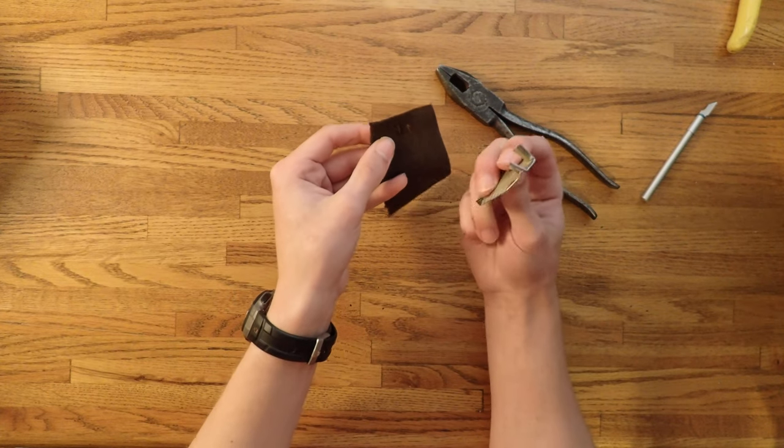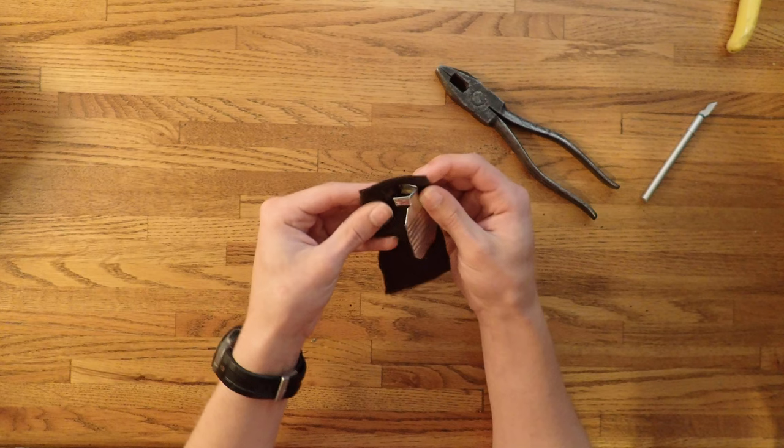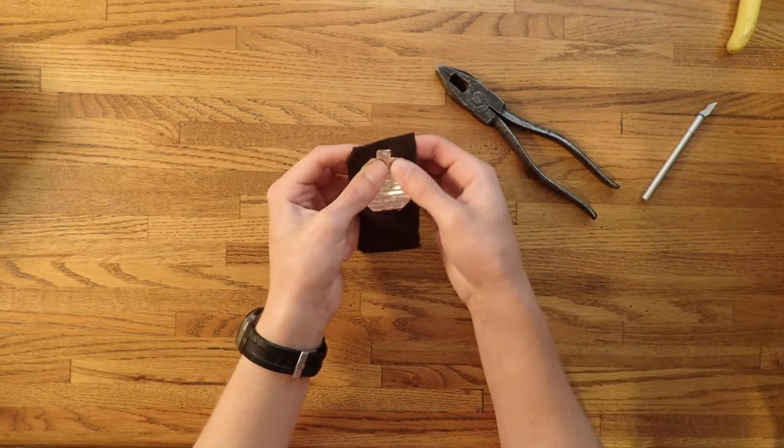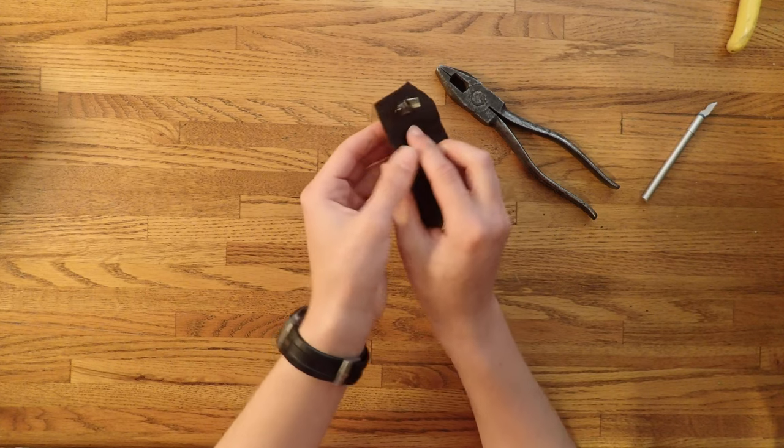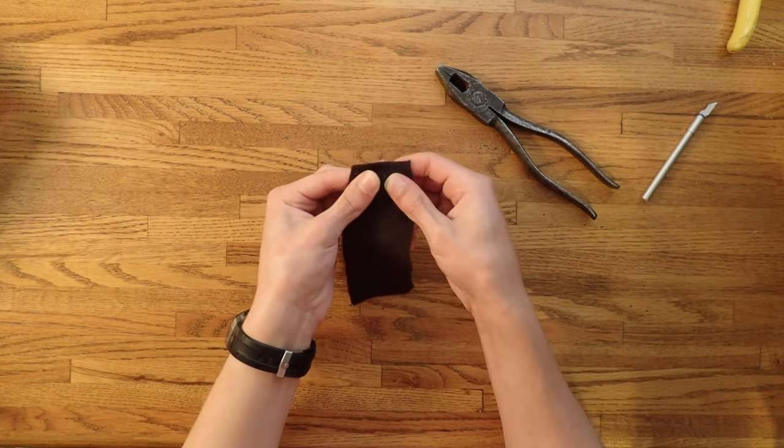Now that they're done, take the tabs and slide them through either slit. Now that's through, flip it over and then crimp down the tabs to hold it to the fabric.